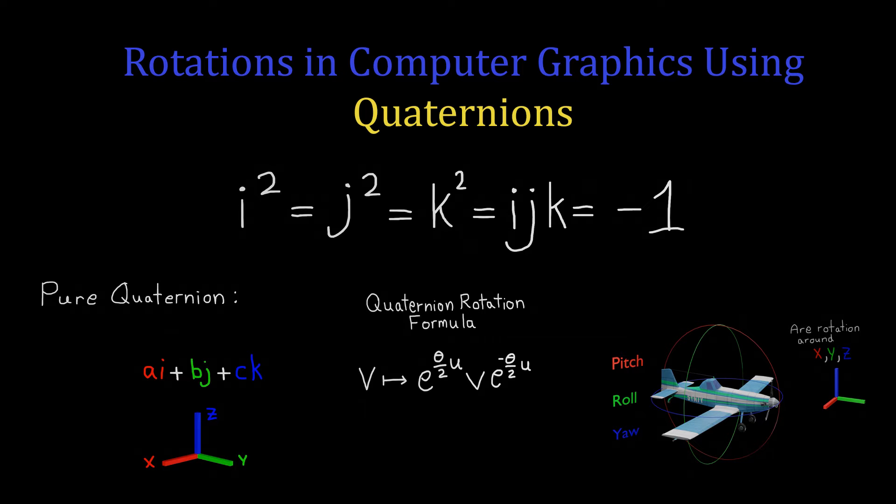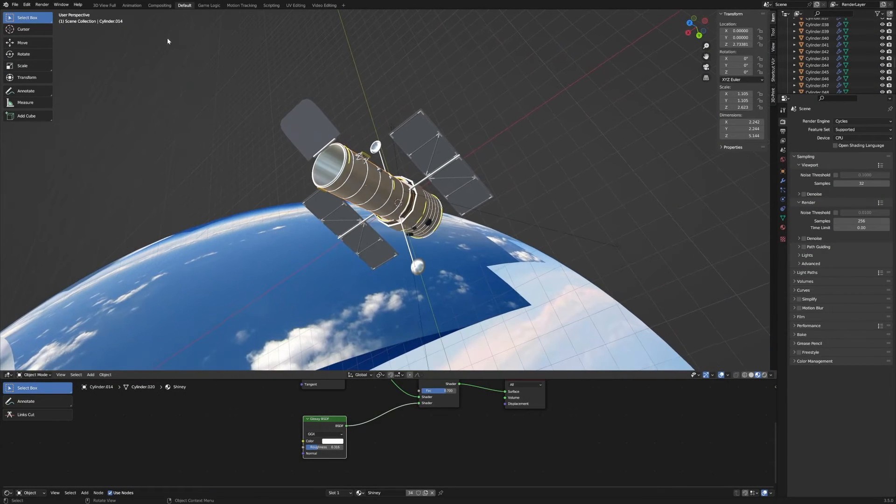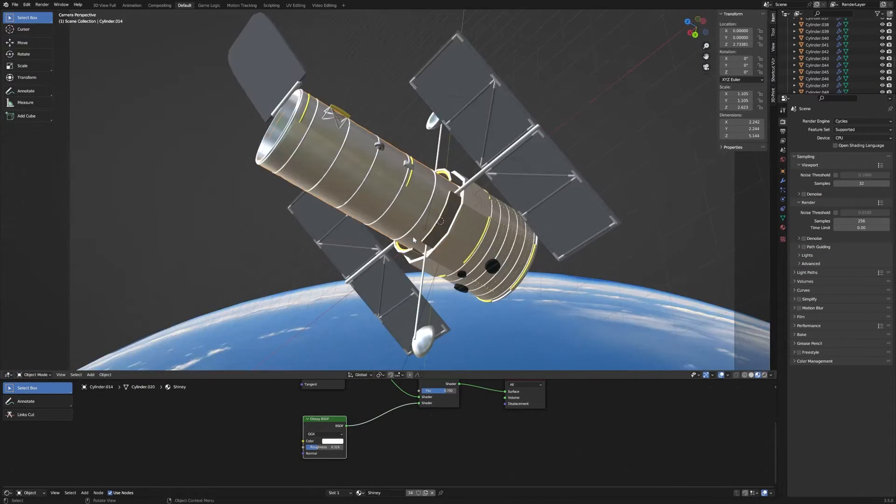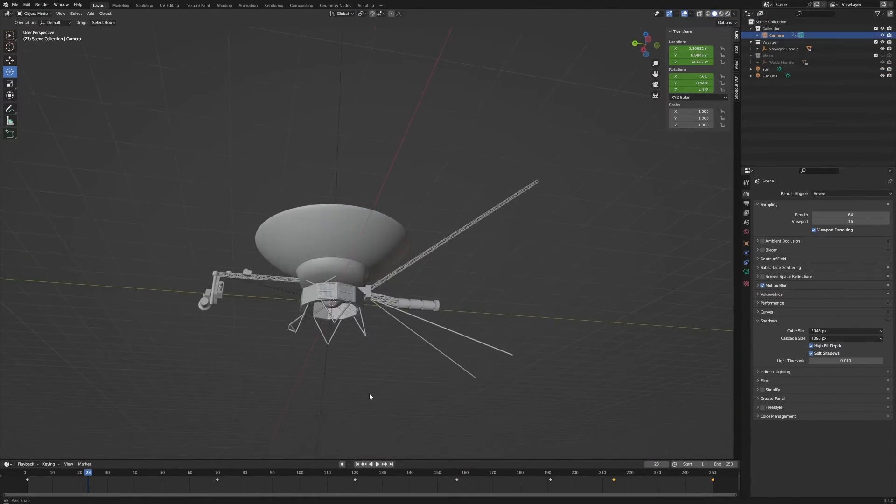A few years back, while I was first learning about 3D modeling and computer animation, I'd made some 3D models, including the Hubble Space Telescope, the James Webb Telescope, and the Voyager probe.